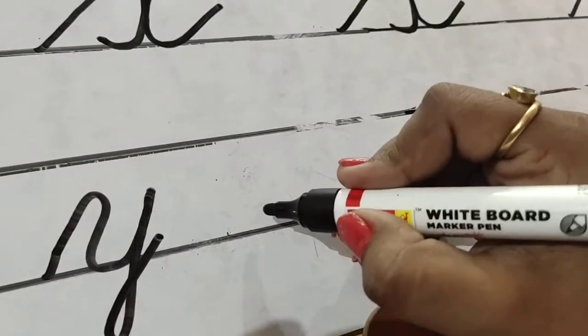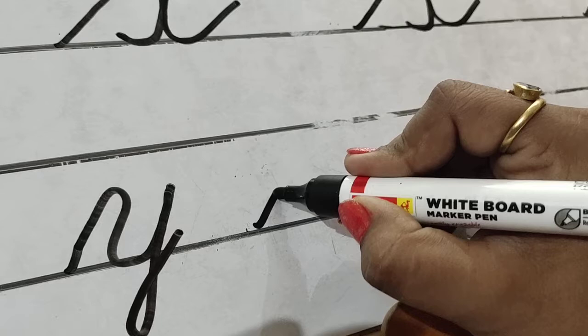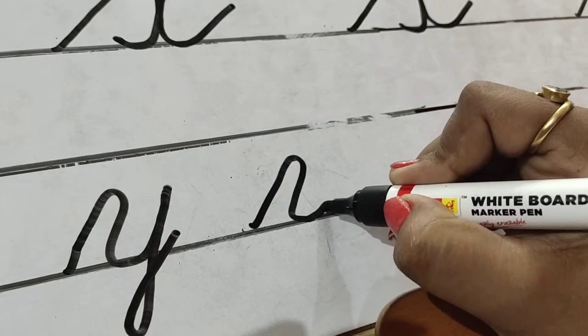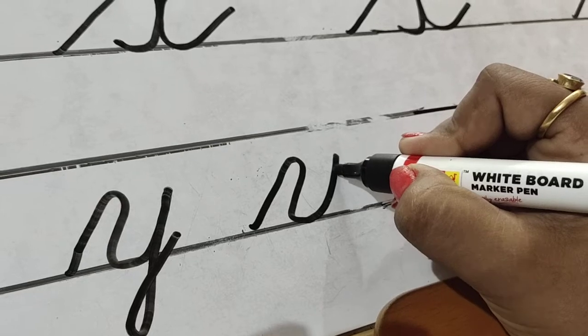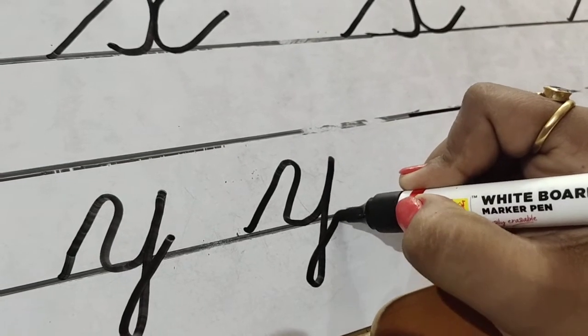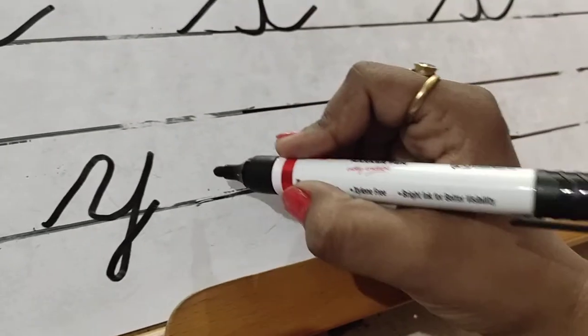Now again Y, lower line, slanting line, curve. Lower line curve touch, again curve, go halfway. Isi pe vaapis niche aayenge, curve dete hain, lower line touch karte hain. Now you see, once again, lower line touch.